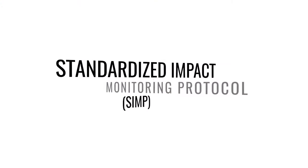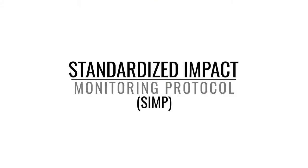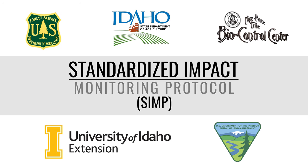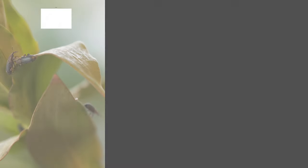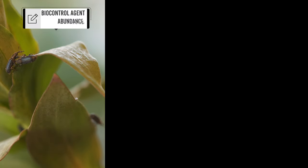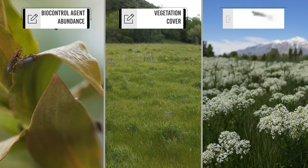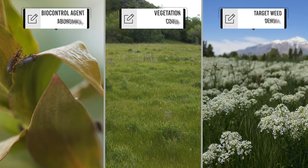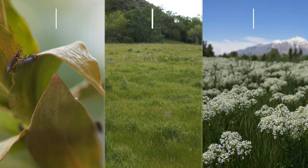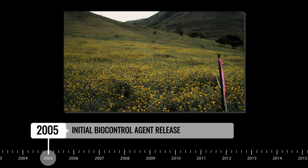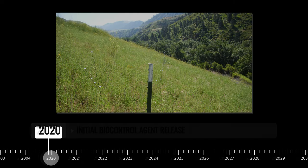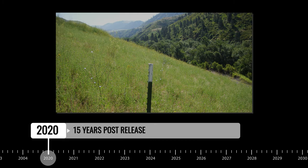The Standardized Impact Monitoring Protocol, or SIMP for short, is a nationally recognized and adopted platform for collecting monitoring data at biological control release sites. The protocol captures biocontrol agent abundance, vegetation cover, and target weed density, and was designed to be simple, efficient, and sufficiently versatile to allow for the collection of this information from the same sites over multiple years.